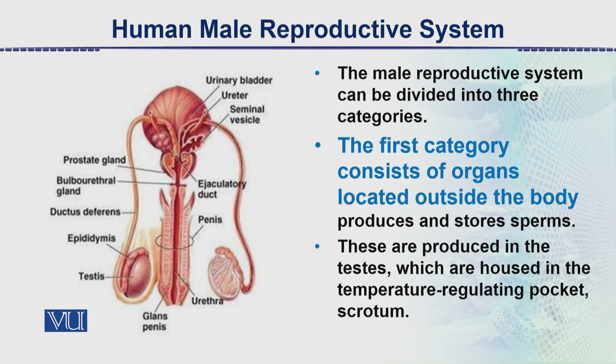The scrotum is a temperature-regulating pocket. Spermatogenesis — that is, sperm formation — requires a specific temperature. The testes are lodged in the out-pocketing of the skin, the scrotum, which may move upward toward the body during winter, or during summer, they tend to move away from the body to maintain the temperature so that spermatogenesis may continue.